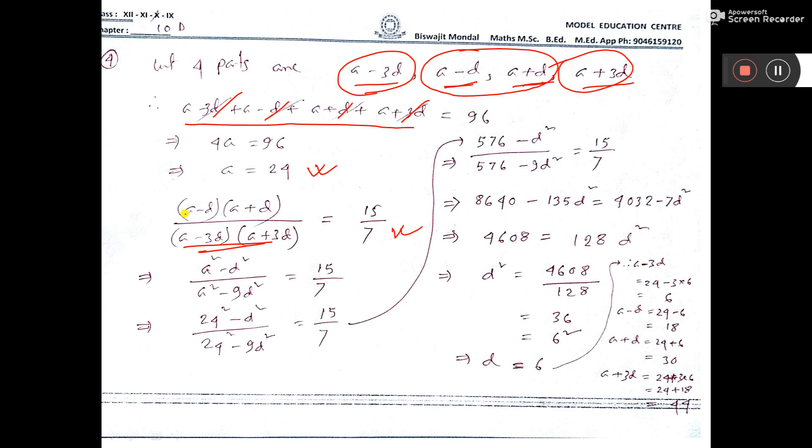So put here, now formula apply a minus b into a plus b, that is a squared minus b squared. Here also a squared minus b squared.